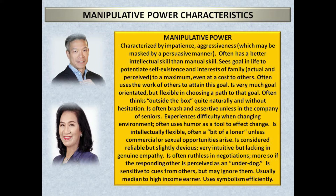Manipulative power: characterized by impatience and aggressiveness, which may be masked by a persuasive manner. Often has better intellectual skill than manual skill. Sees the goal in life as potentiating self-existence and family interests to a maximum, even at a cost to others. Often uses the work of others to attain this goal. Very goal-oriented but flexible in choosing a path. Often thinks outside the box naturally and without hesitation. Often brash and assertive unless in the company of seniors. Experiences difficulty when changing environment. Often uses humor as a tool to effect change. Intellectually flexible, often a bit of a loner unless commercial or sexual opportunities arise. Considered reliable but slightly devious. Very intuitive but lacking in genuine empathy. Often ruthless in negotiations, more so if the responding other is perceived as an underdog. Sensitive to cues from others but may ignore them. Usually a median to high income earner, and uses symbolism efficiently.